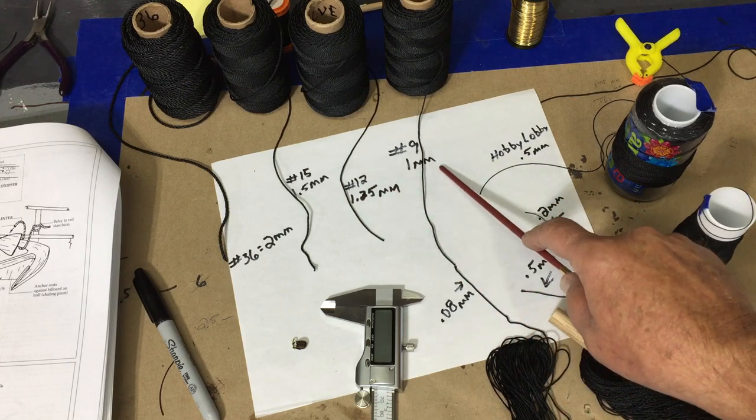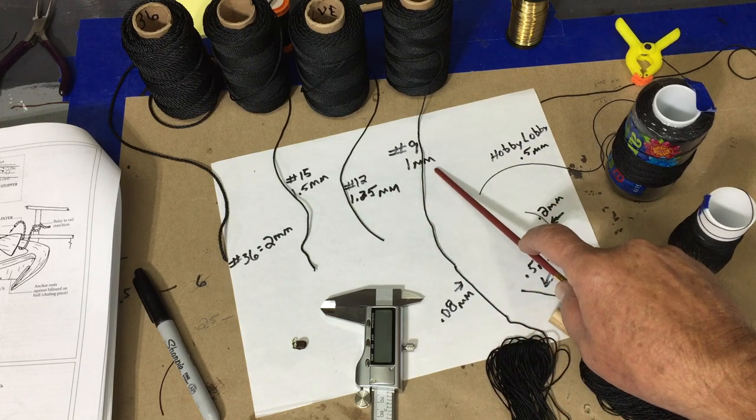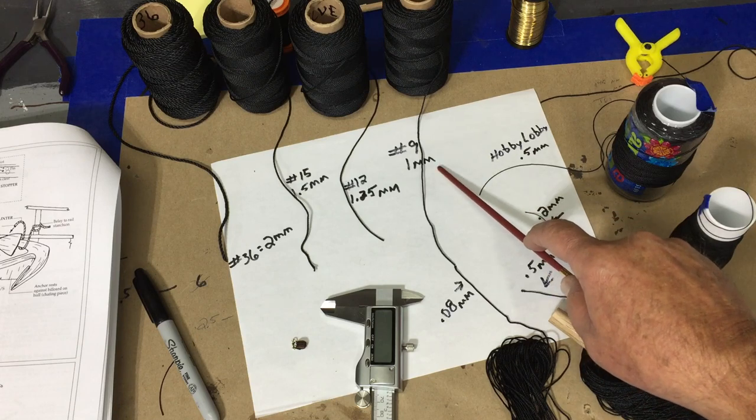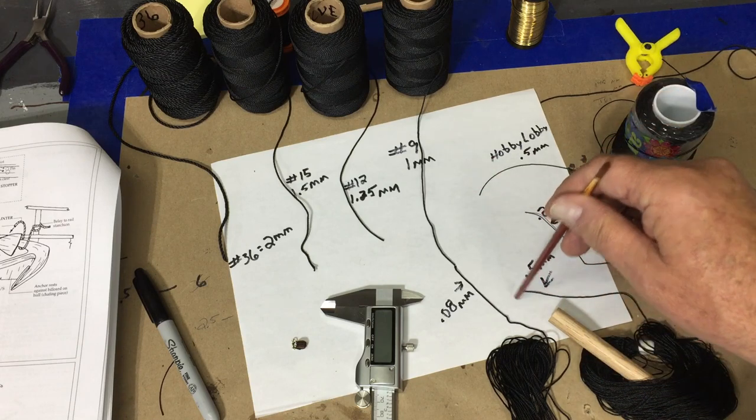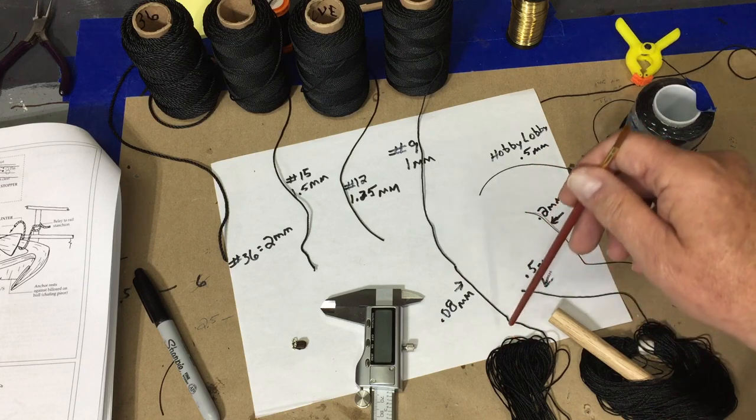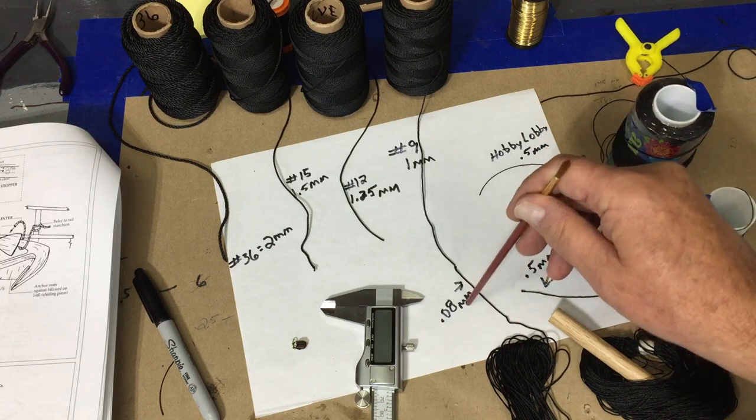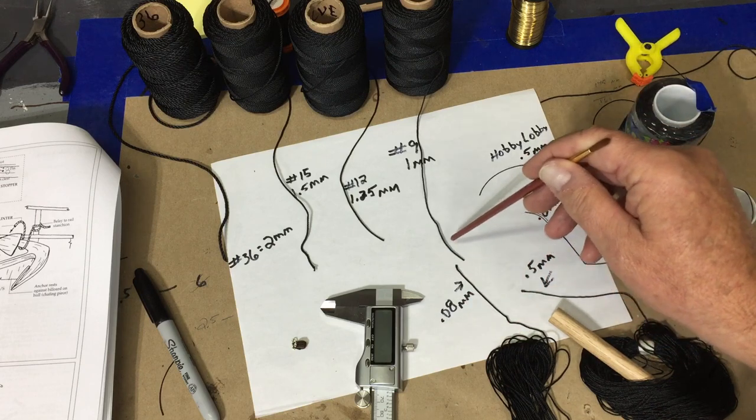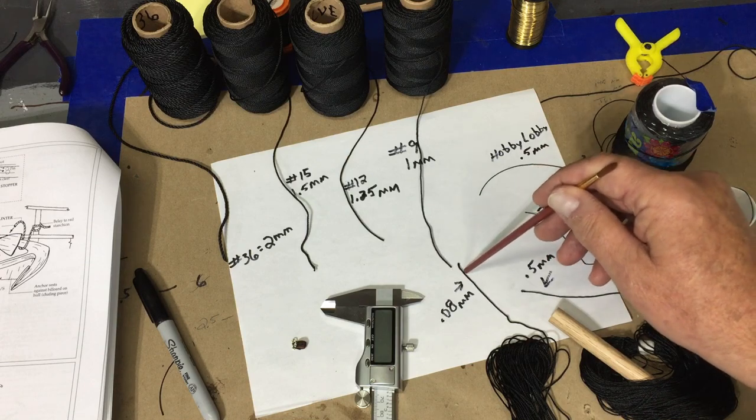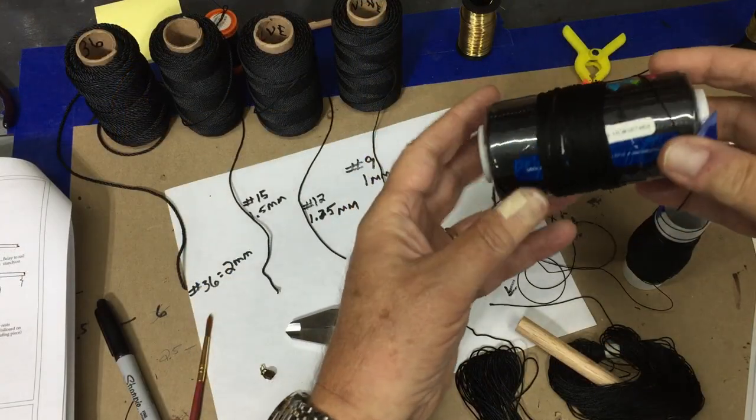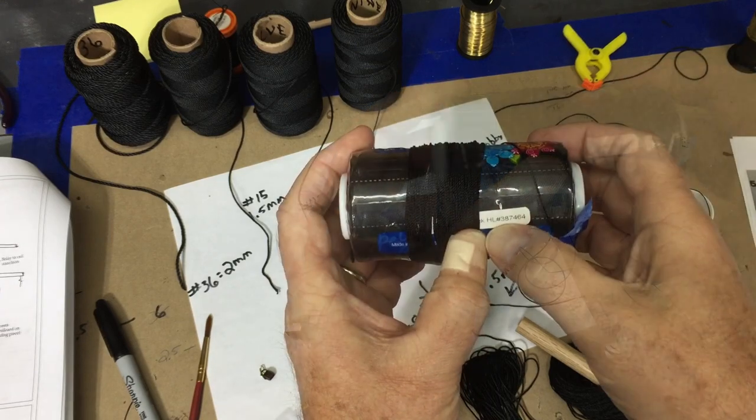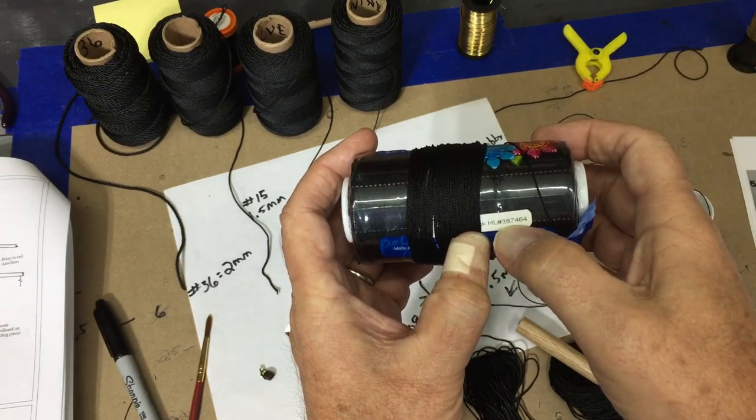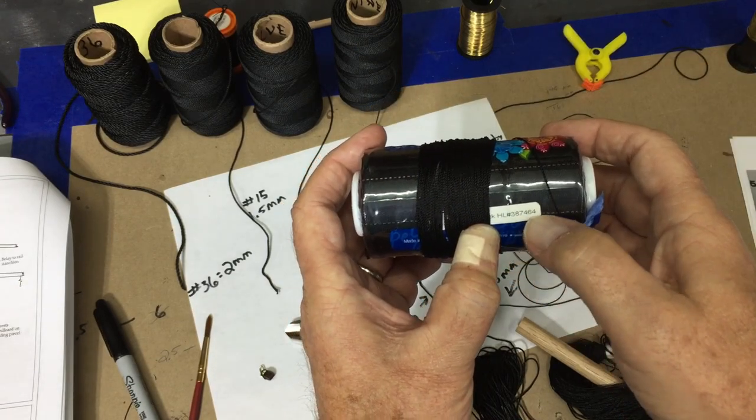It's just two hundredths larger than what came with the ship. So this is what came with the ship—it's 0.08 millimeters—and there's very little difference.